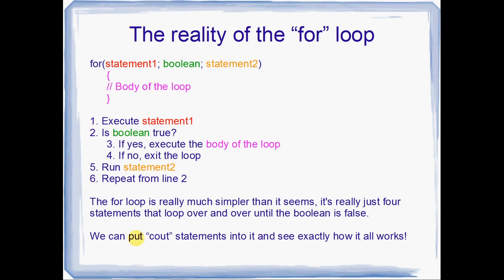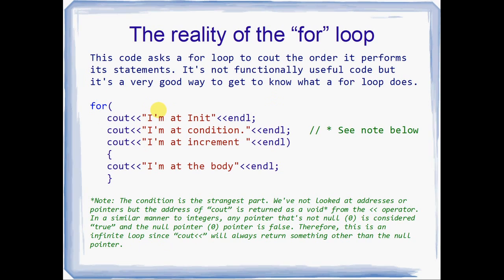Because they're just statements, we can actually put couts in there instead. If you're having a bit of trouble figuring out where exactly a for loop is going, you can just put couts in there. So cout, I'm at init, and then a semicolon. cout, I'm at condition, and then a semicolon. cout, I'm at increment, and then we close the heading to the for loop. And in the body, I'm at the body. This is an infinite loop, but it's going to print out these statements in the exact order that the for loop executes them. It's interesting to see if you're not sure what order it's going to do things.